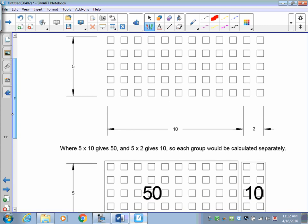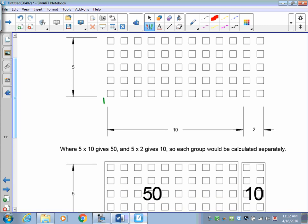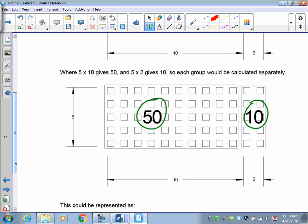Here's 5, and here is the 10, 2 split. Notice that the 5 by 10 gives us 50, and the 5 by 2 gives us 10. Even though we split up one of the numbers, it's still going to give us the same answer.